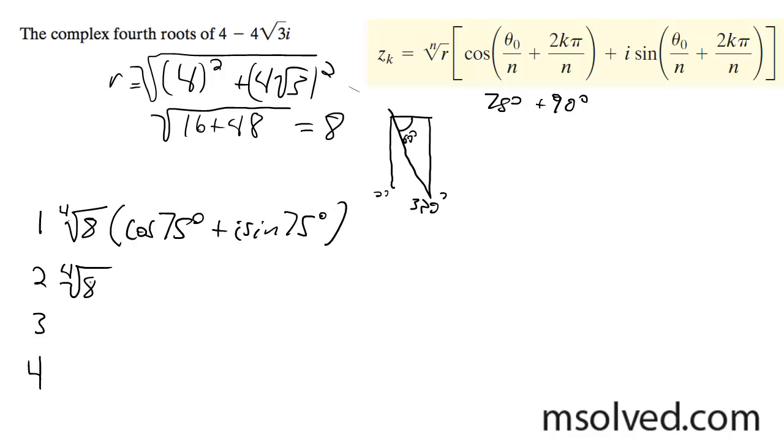This is fourth root of 8. Plus 90 gives 165 degrees. Root 2 is fourth root of 8 times cosine of 165 degrees plus i sine of 165 degrees.